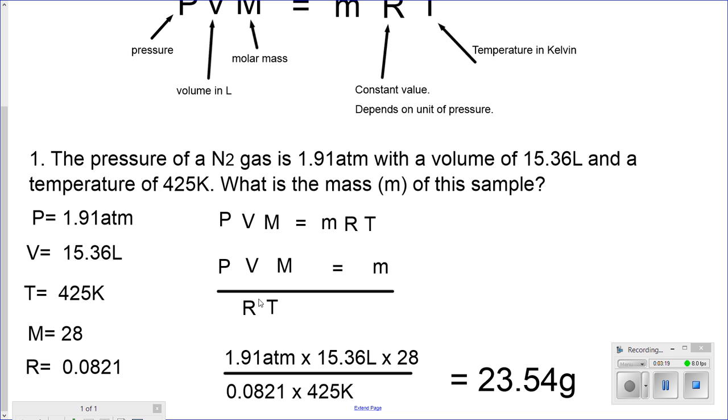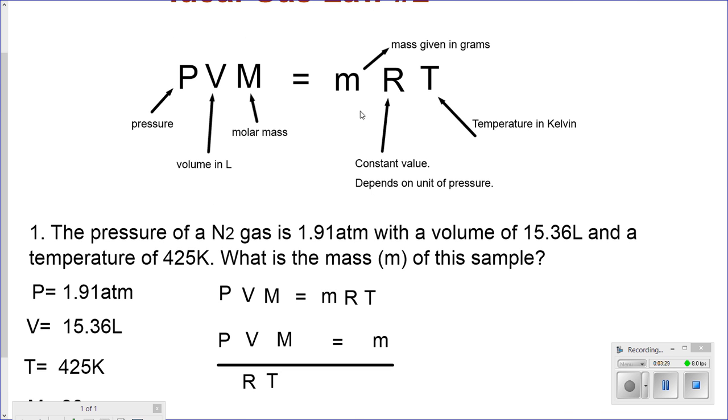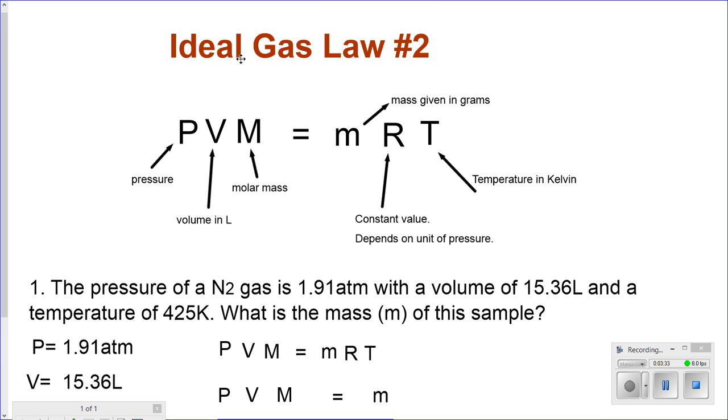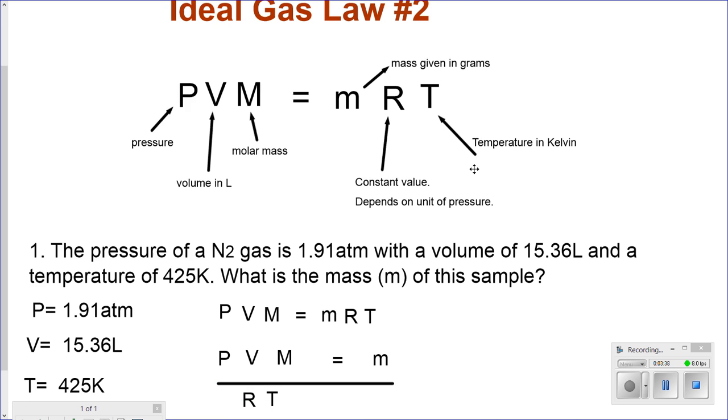PVM divided by RT gives me 23.54 grams. This is solving for the mass. The equation PVM equals mRT, this variation of the ideal gas law, we're going to call this law number two.